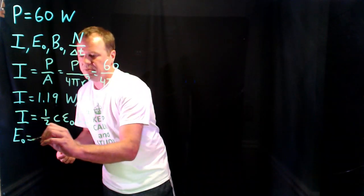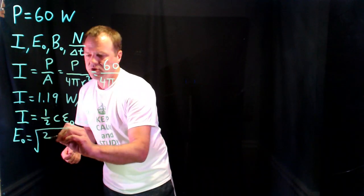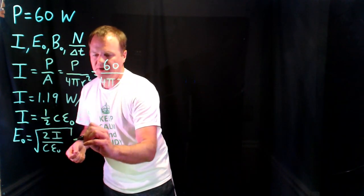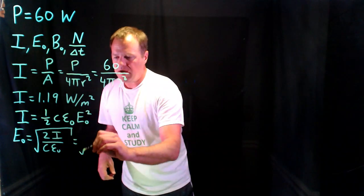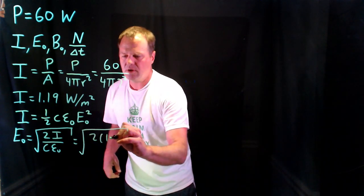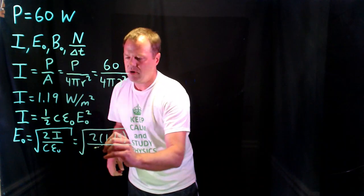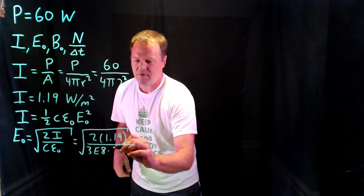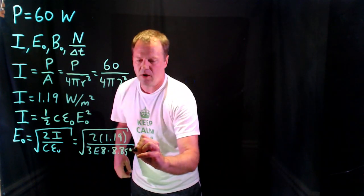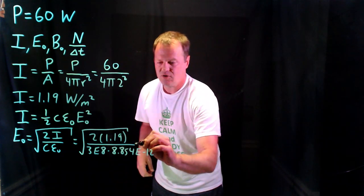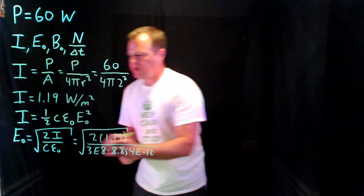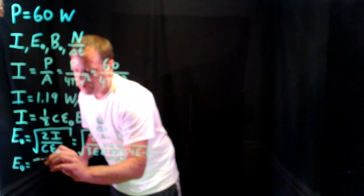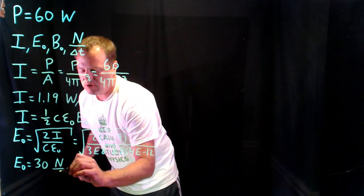A few steps of algebra give that the electric field equals the square root of 2 times the intensity over c times epsilon-naught. Throwing in the numbers — square root of 2 times 1.19, divided by the speed of light (300 million) times the permittivity of free space (8.854 × 10⁻¹²) — I find that the magnitude of the electric field is 30 newtons per coulomb.